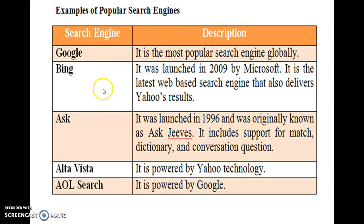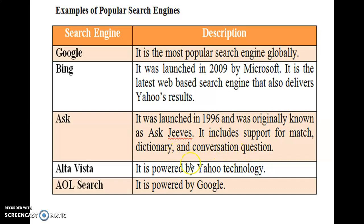Examples of popular search engines include Google, Bing, Ask, AltaVista, and iSearch. Google is the most popular search engine globally. Bing was launched by Microsoft. Ask Jeeves supports dictionary and related features. AltaVista is powered by Yahoo technology. AOL is powered by Google.